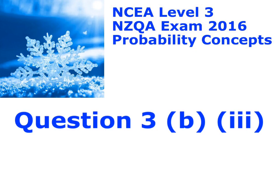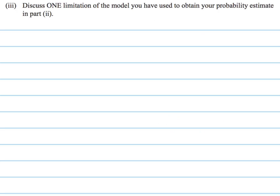Here is question 3b, part 3. So here's our question: discuss one limitation of the model that you use to obtain your probability estimate. When they talk about limitations, we often go back to the assumptions of the model. We've got two main assumptions that we can talk about, and we've also got to think about other variables that could be affecting it.